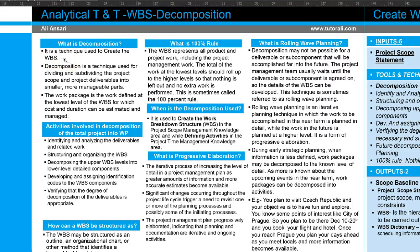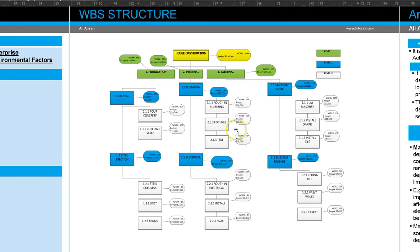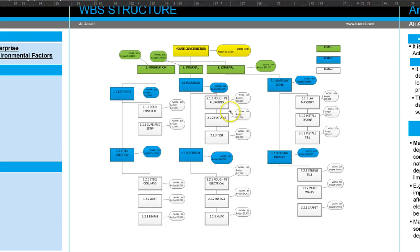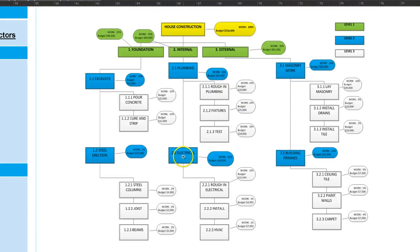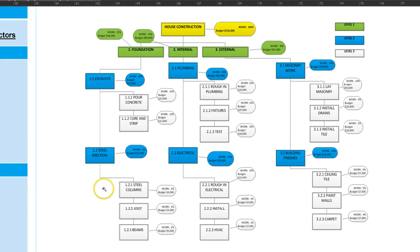Decomposition is a technique used to create the work breakdown structure. A work breakdown structure defines the total scope for the project — everything that needs to be done for the project to be successfully completed. In this example we have a house at the top, broken down into three different levels: level one in green, level two in blue, and level three in white. We start with the house and break it down into different tasks.